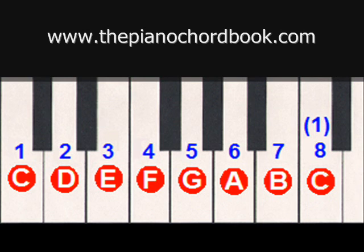Building a chord off the third scale degree will give us an E minor chord. We start with E, go up to the fifth, G, and up to the seventh, B. We end up with an E minor chord: E, G, B. The fourth scale degree will give us F major. If we build a chord off of F, the fourth scale degree, go up to the sixth, A, and then up to the eighth or the one, C, that gives us an F major chord: F, A, C.